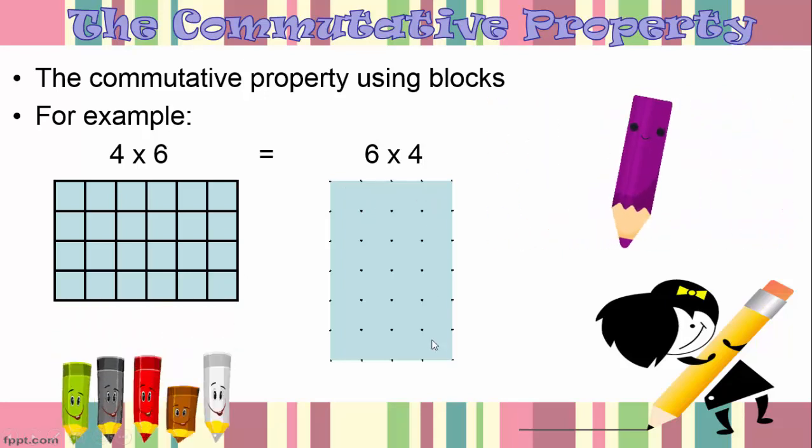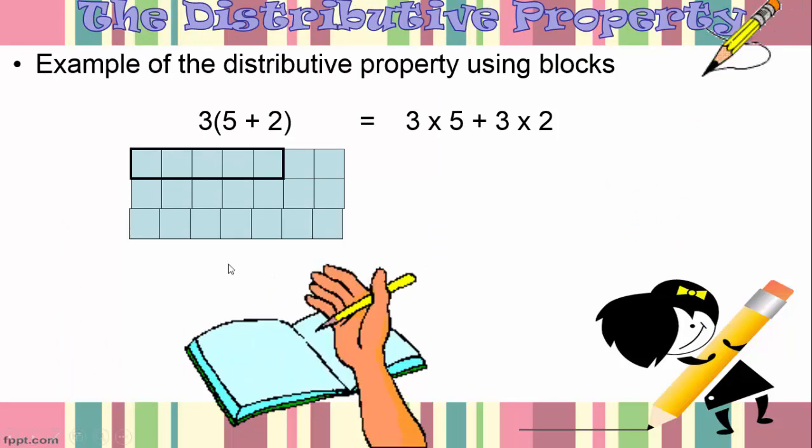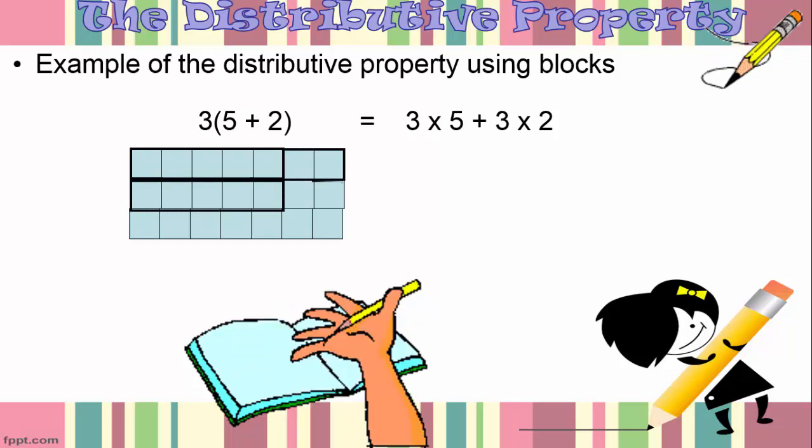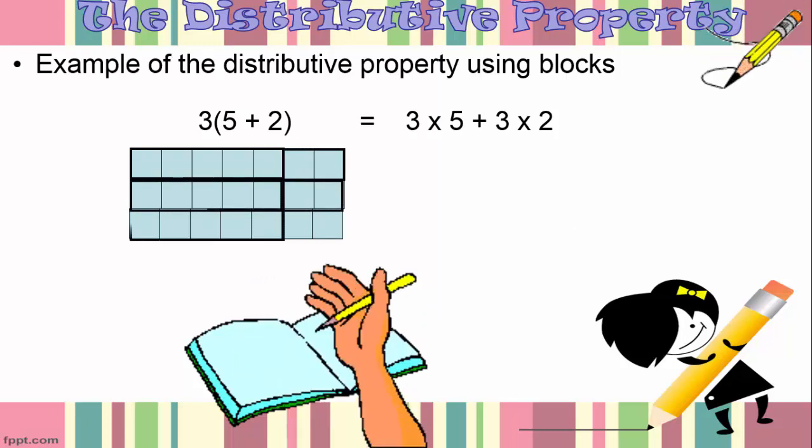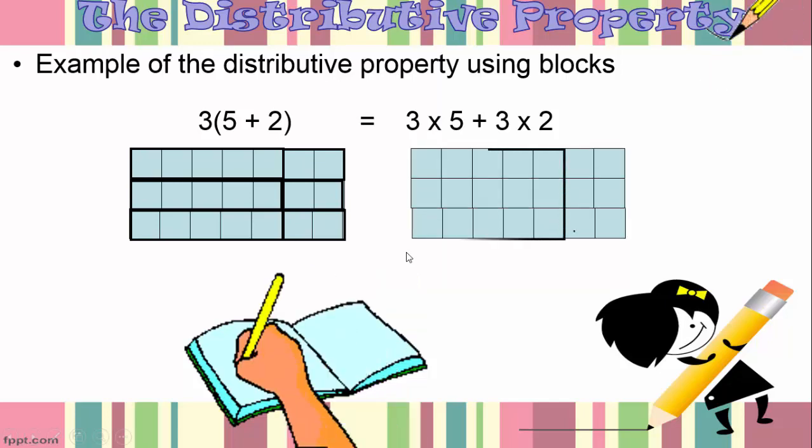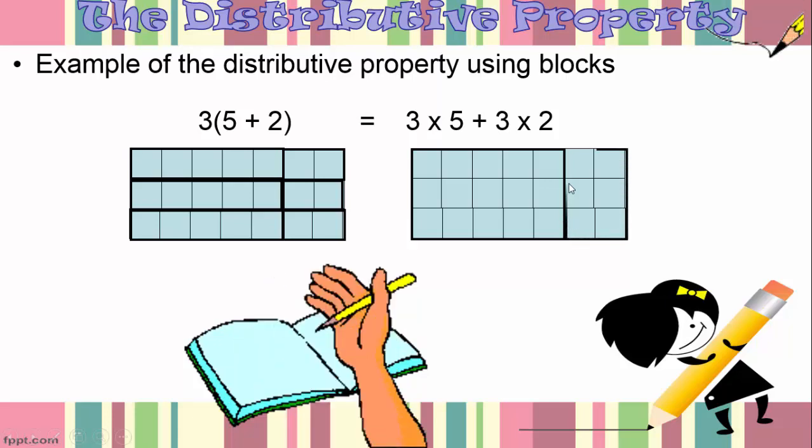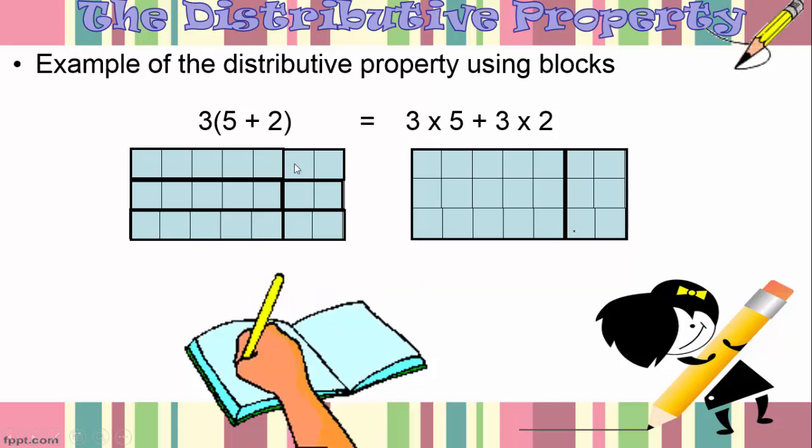For the distributive property using blocks we have 3 times (5 plus 2) is equal to 3 times 5 plus 2 times 3 and we see they take up the same area and contain the same number of units.